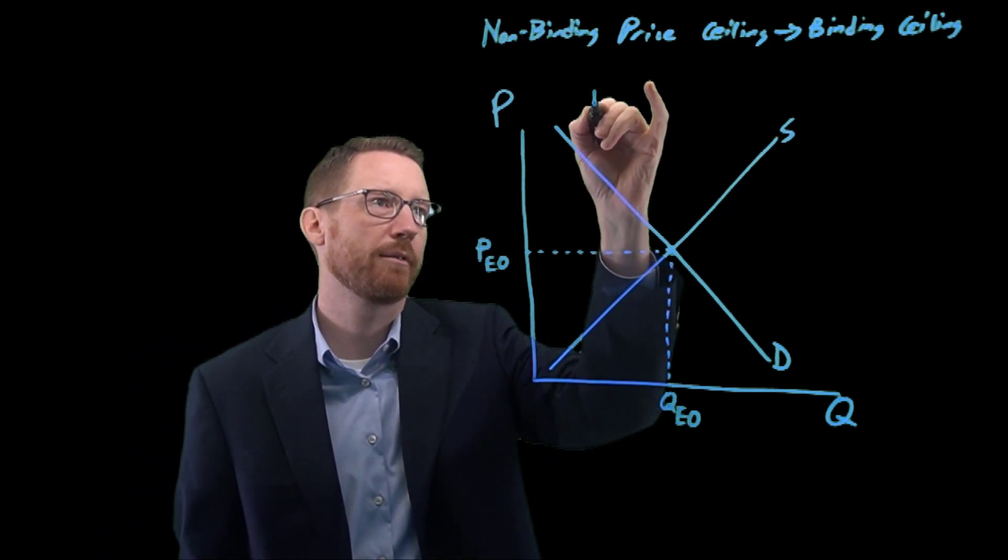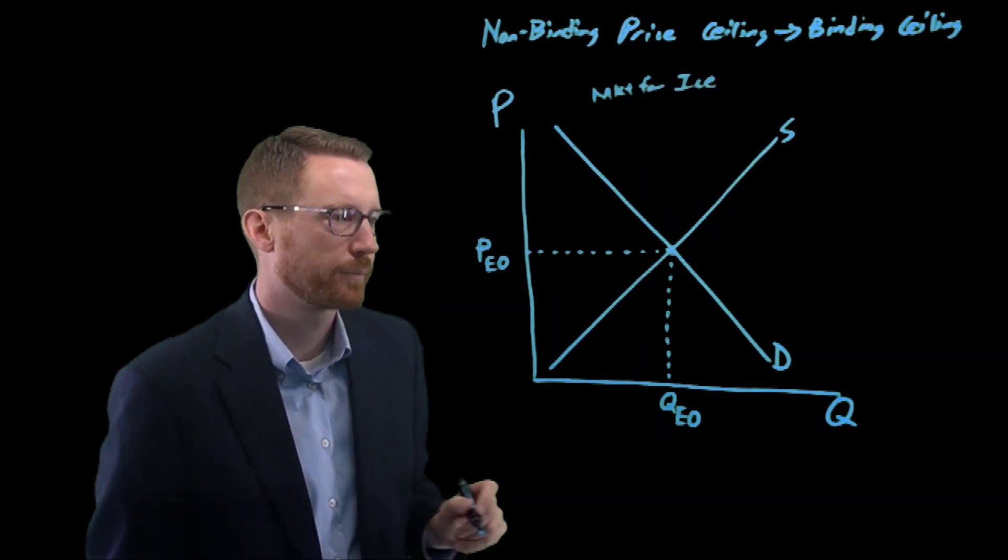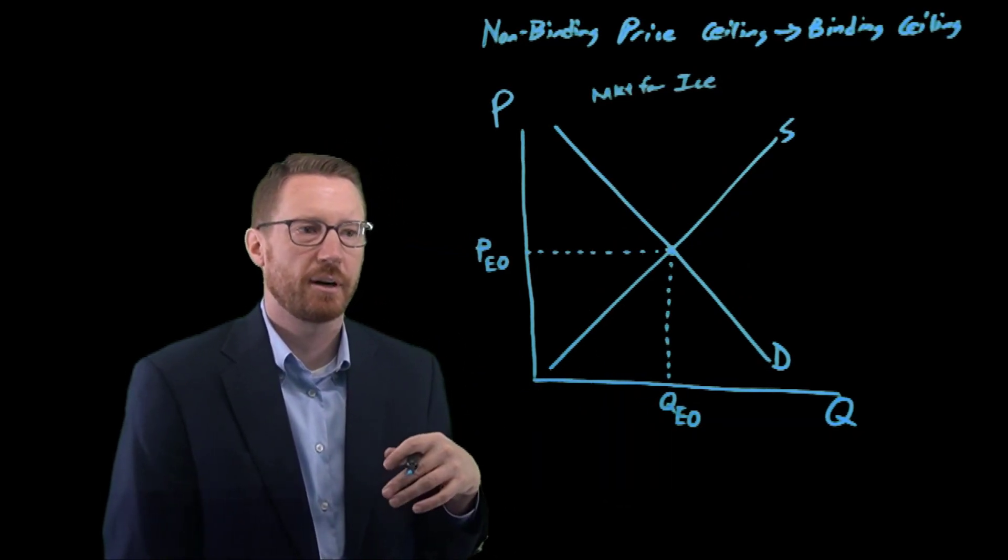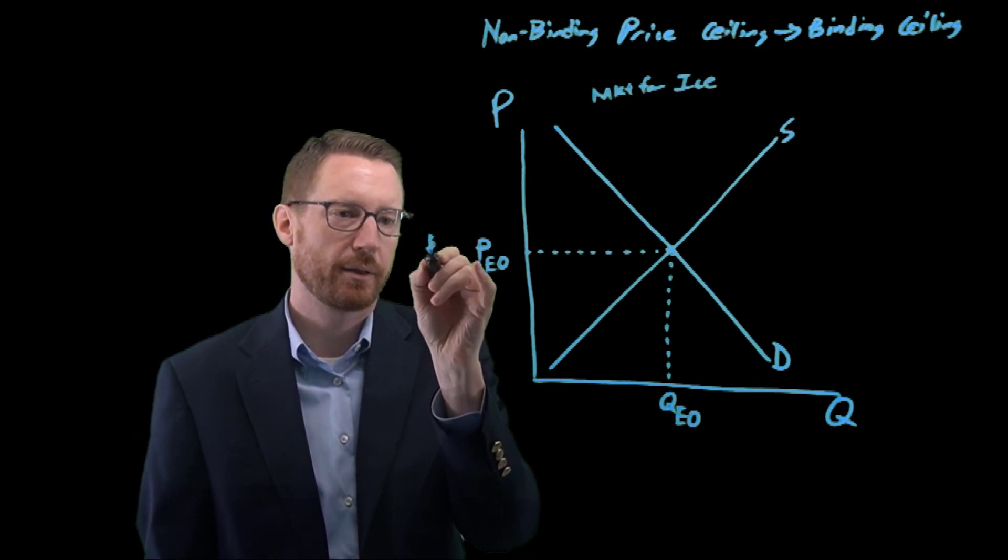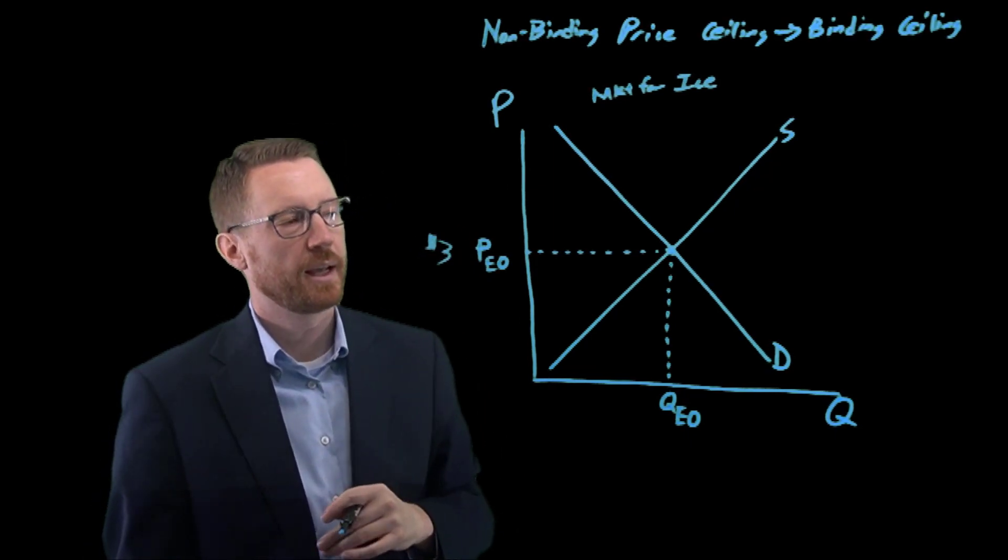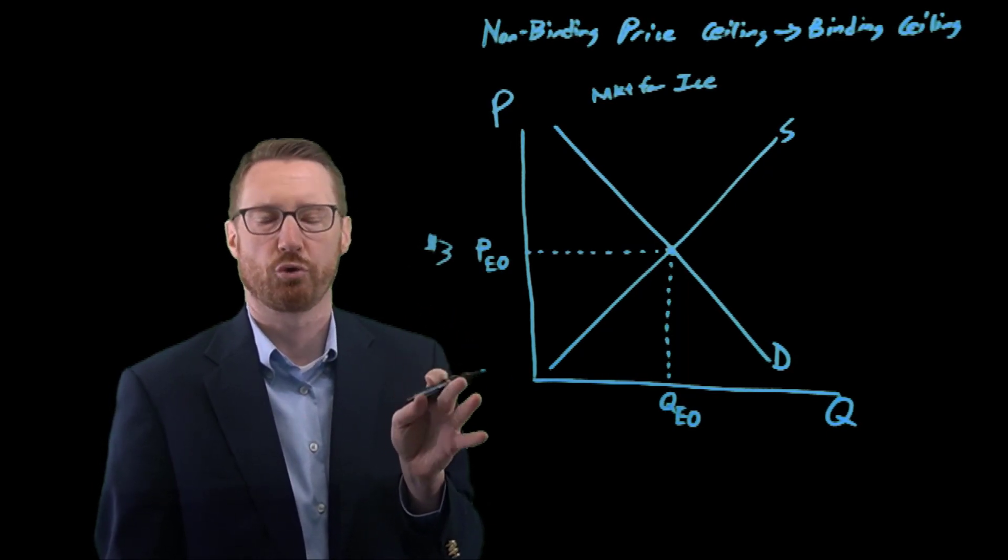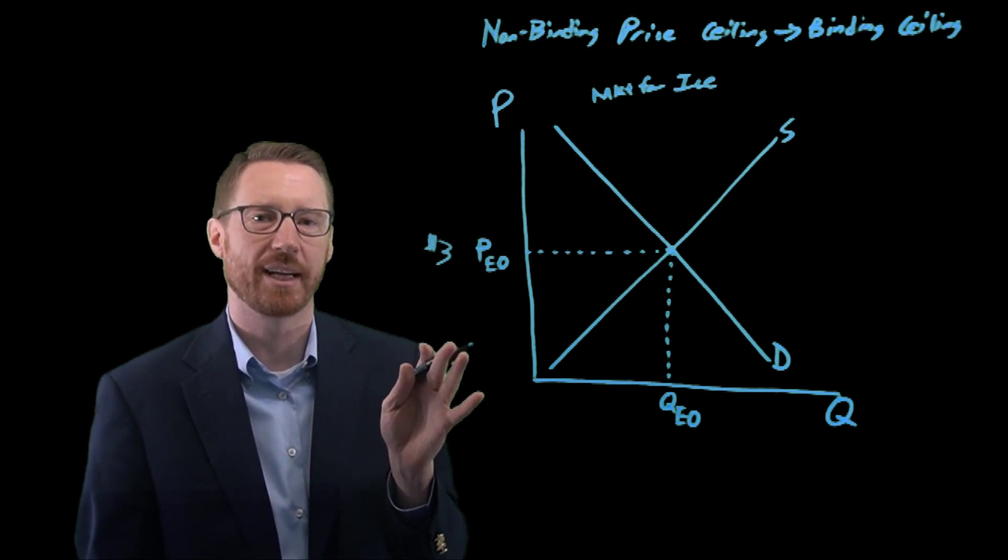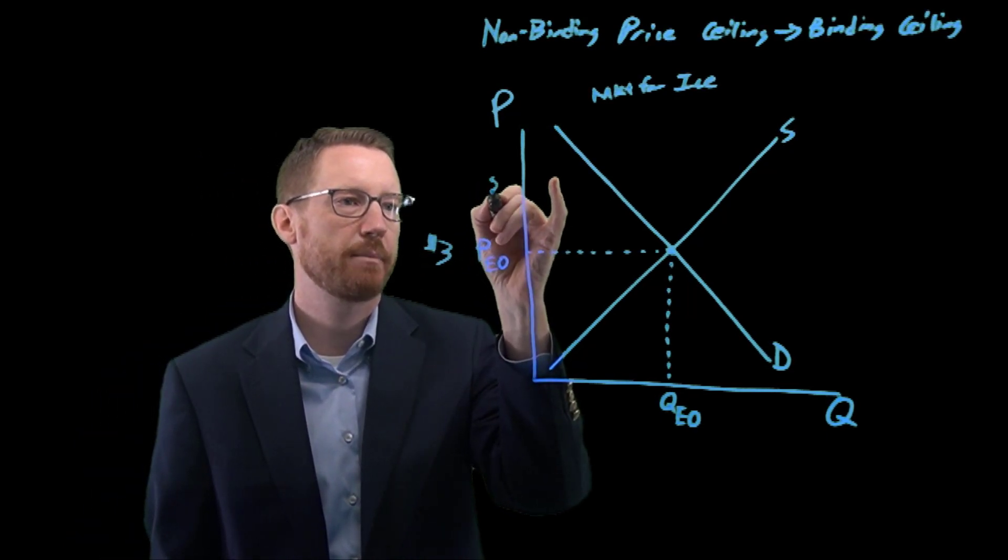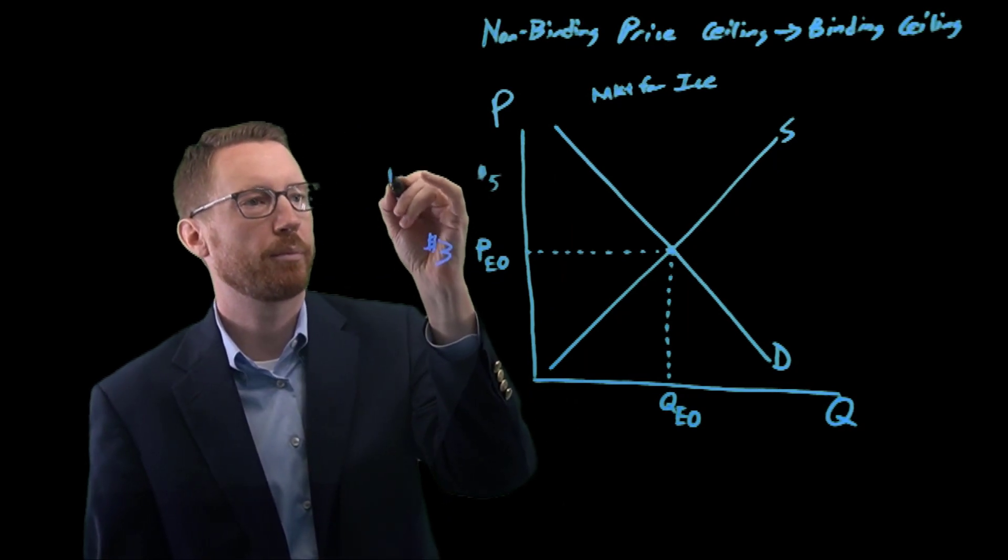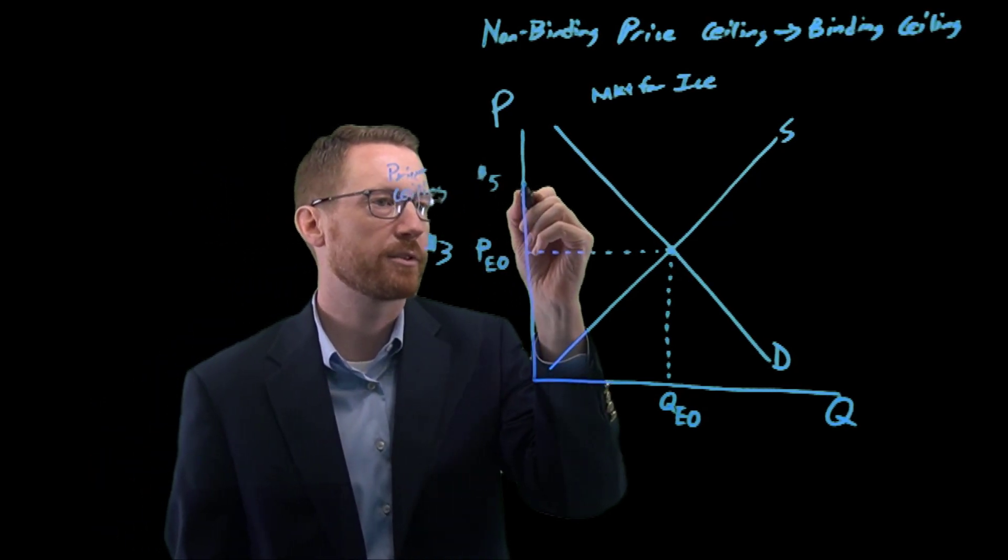What should we look at as an example? Let's suppose this is the market for ice, like bags of ice. Suppose our initial equilibrium price is like three dollars. The government says we want to make sure the price of ice doesn't get out of control, so they put in a price ceiling on ice, a limit to the price of ice of like five dollars. Suppose they put in a limit of five dollars. This is our price ceiling. The price can't rise above five dollars.